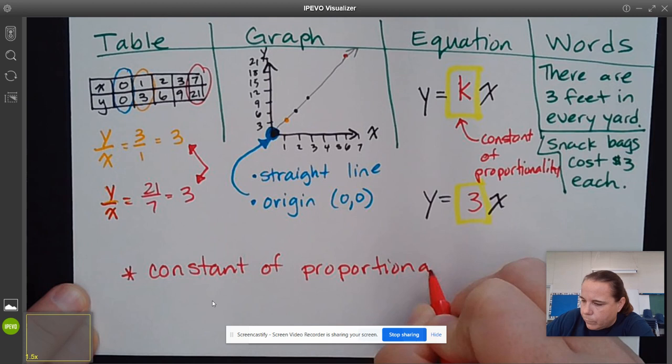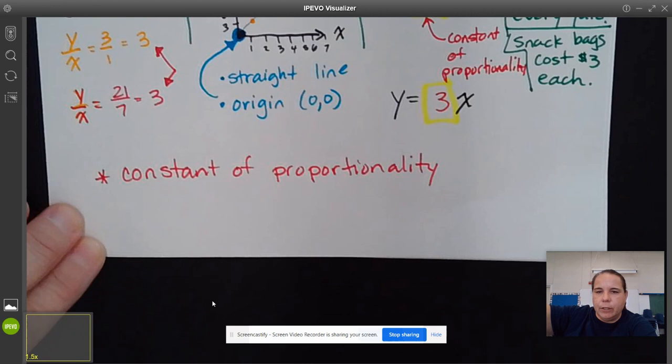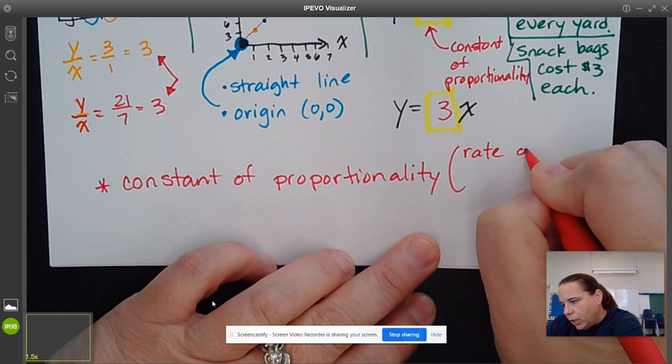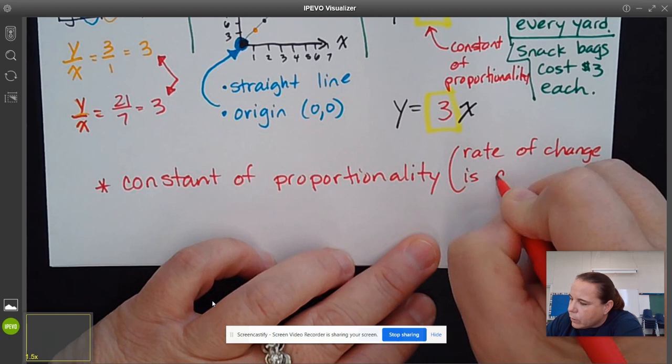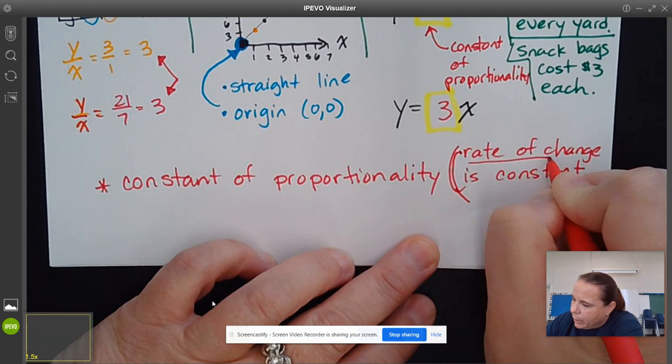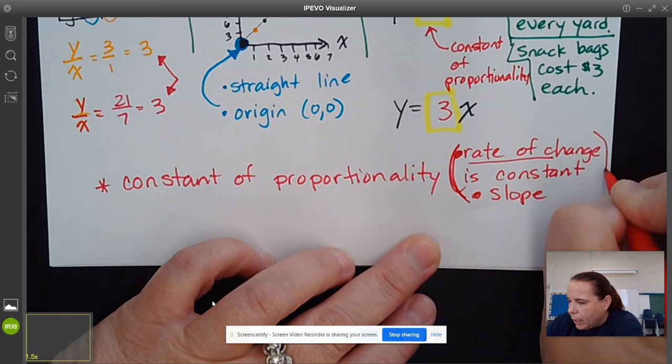And as we get a little bit further into this chapter, that this is what we also call the rate of change is constant. And you're also going to see this idea of slope. So if you don't know what those are right now, that's okay. They're eighth grade ideas.